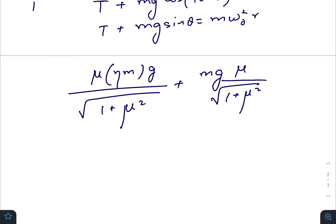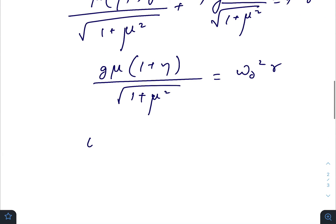Simplifying, this becomes (1+μ²), so taking gμ common: gμ(1+η)/√(1+μ²) = ω₀²r. Finally we get ω₀ equals the square root of μg(1+η) divided by r(1+μ²).